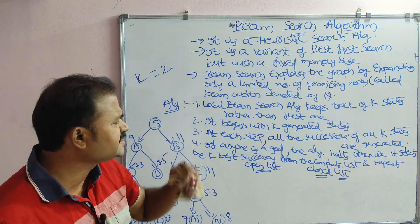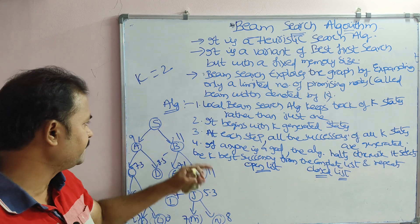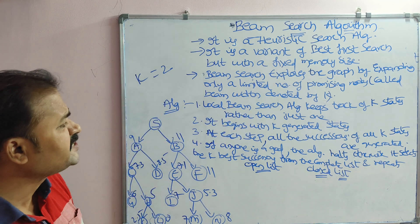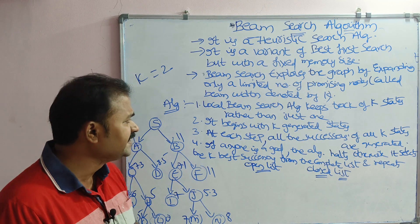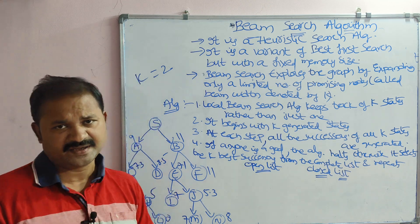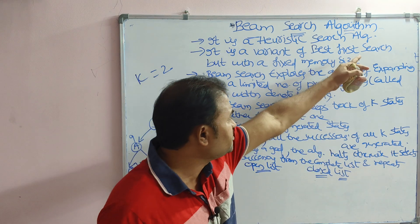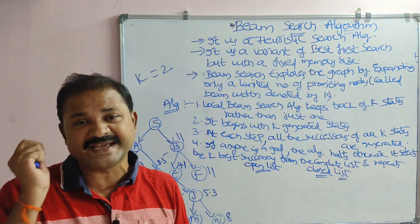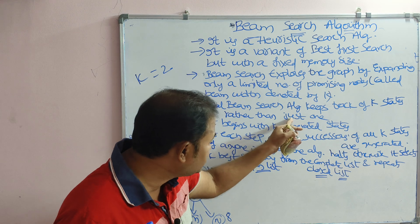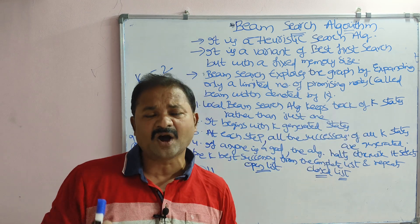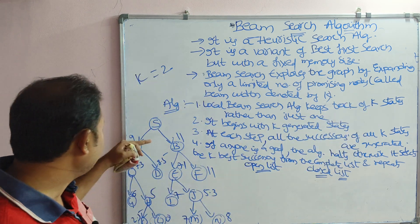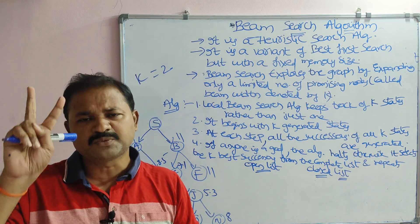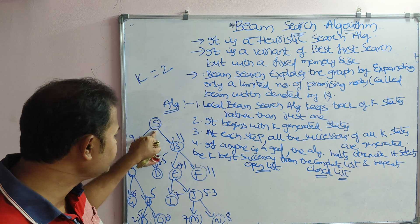One variant of beam search is the local beam search algorithm. The first point: local beam search keeps track of k states rather than just one. In best-first search we maintain only one state, but here we keep track of k states. In this example, k equals 2, so we have to store two nodes at a time.